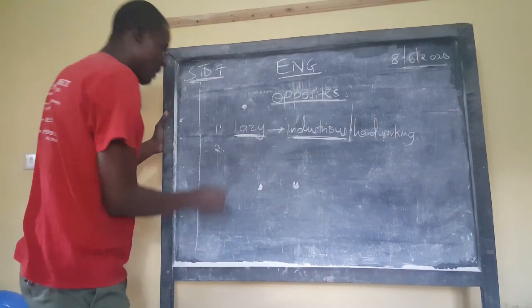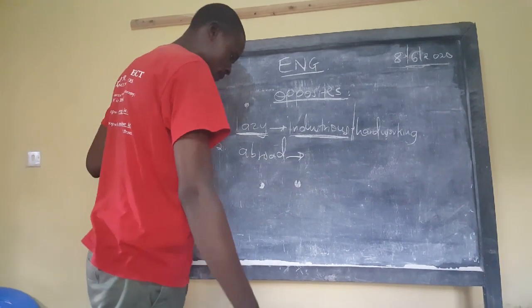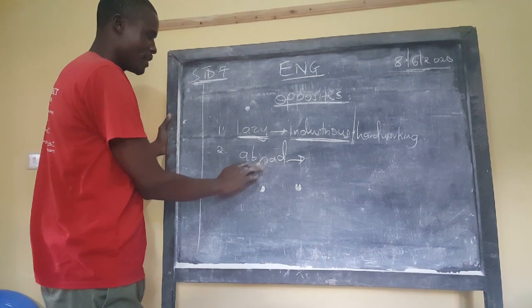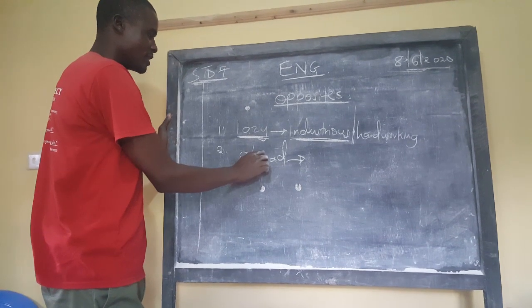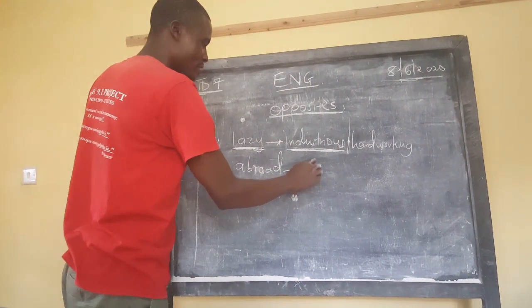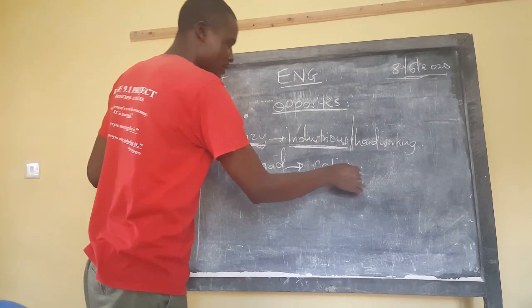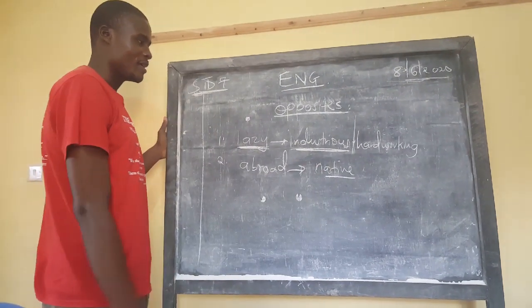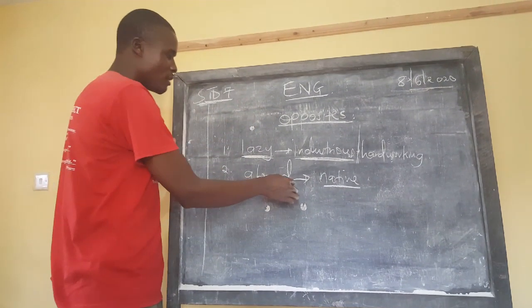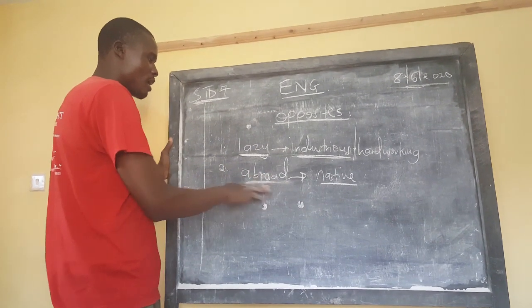Number one, we have the word 'abroad'. Like when somebody stays abroad — for example, my father is a teacher in China, so your father stays abroad. The opposite of that is 'native', meaning that one is within. Like you normally have native tourists — tourists that come from our own country — while tourists that come from other countries come from abroad.